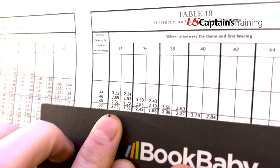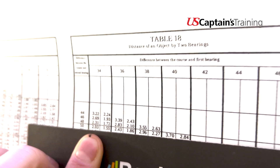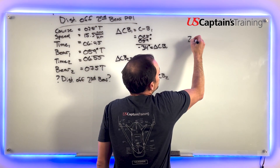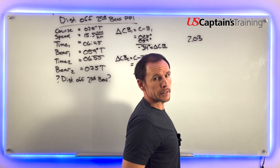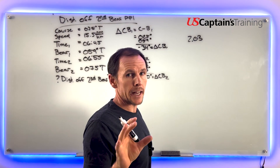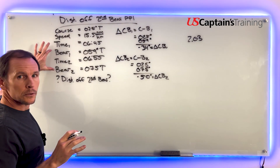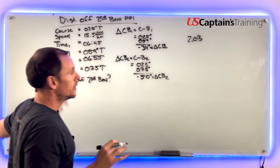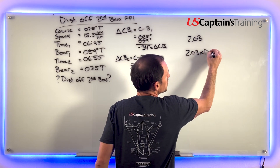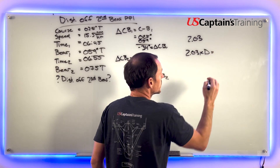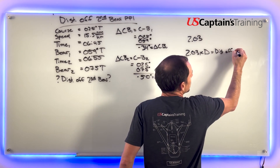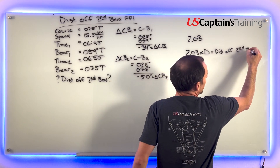From the table we get 2.03, and we record that. We take that table value and multiply it by the distance traveled between the times we took the bearings. So: 2.03 times the distance traveled between sightings equals the distance off at the second bearing.